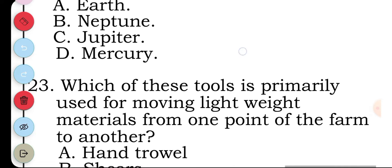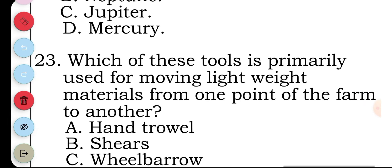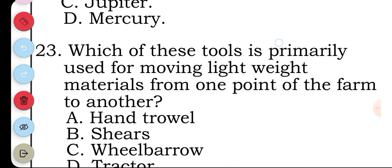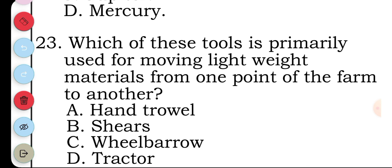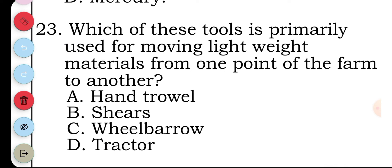Question twenty-three: which of these tools is primarily used for moving light materials from one point of the farm to another? A hand hoe, B shears, C wheelbarrow, D tractor. The answer to question twenty-three is C, wheelbarrow.